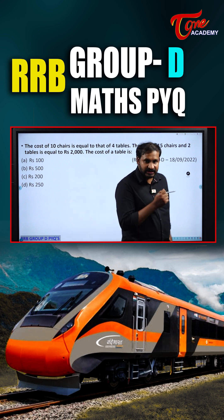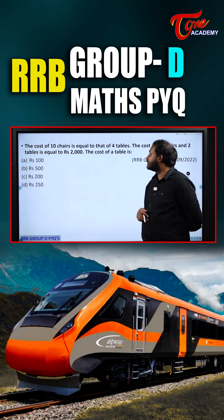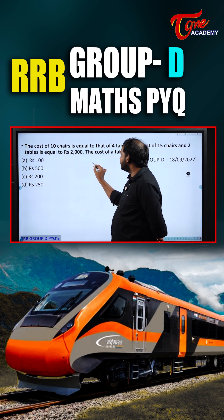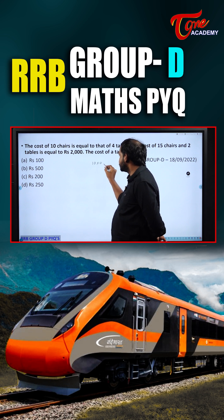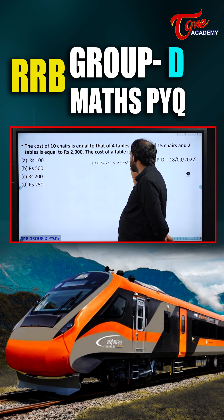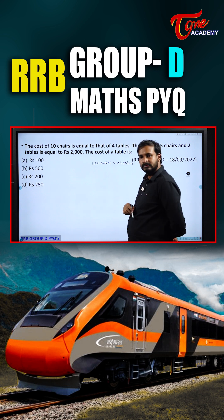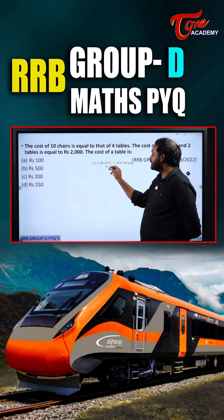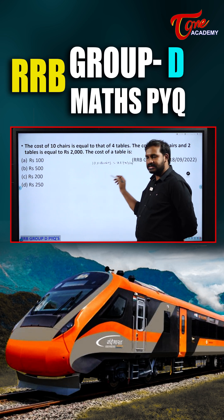Now, see here — the cost of 10 chairs is equal to 4 tables. That means I can write: 10 into chairs is equal to 4 into tables. Assume chairs as C, tables as T.